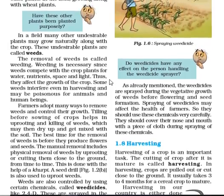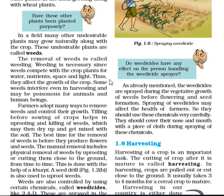Now students, what is a weed? A weed is an unnecessary plant that grows by itself naturally along with the crops. Since these are plants, they obviously need nutrients, water, space, and light — the same as the crops. So these undesirable and unwanted plants compete with the crops which are required by us.